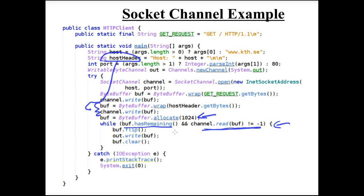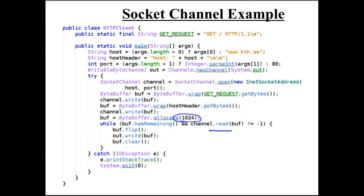Note that this read is blocking — we have not set the channel to be non-blocking. The read operation will block, and when there is data it will read all available data up to the buffer size. Then we must flip the buffer to prepare it for reading, then read from the buffer and write to the output channel. Then we clear — clear means to empty the buffer. Flip is used after writing to prepare for reading; clear is used after reading to start writing again.